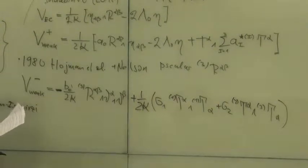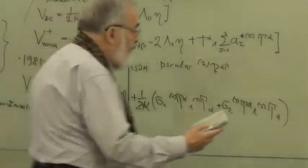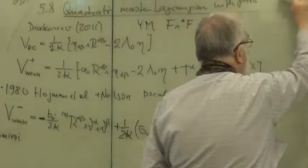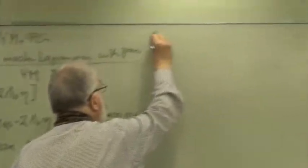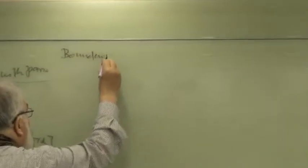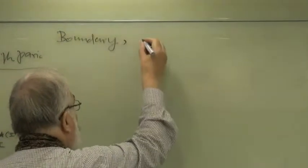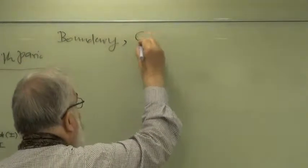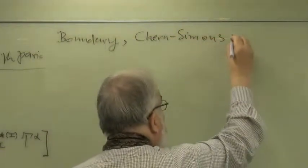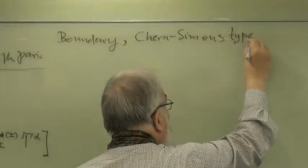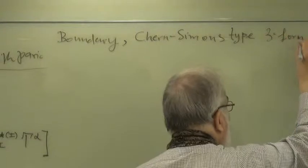Now there is a special thing which we know also from Yang-Mills theory: boundary terms. These are quadratic terms which you can put under exterior derivatives. What we have here is the Chern-Simons type, because Chern-Simons refers to curvature, but we talk here about torsion, so I say a Chern-Simons type three-form, which is fairly well-known.